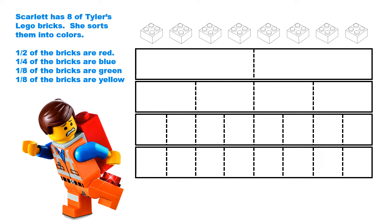Before you go to complete your independent work, I want to show you one additional problem with visual models set up on top of each other to make it easier to compare fractions. We have a Lego theme today. Scarlett has eight of Tyler's Lego bricks and sorts them into colors: half of the bricks are red, one fourth are blue, one eighth are green, and one eighth are yellow. The numerator is one for each fraction, but the part size is different because the denominator is different.